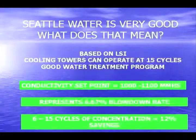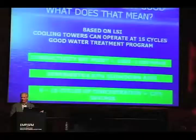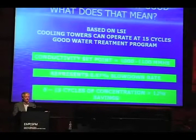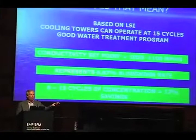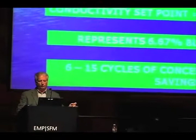I plugged Seattle water into this model and did some calculations to find out where you should be. Based on the LSI, cooling towers in Seattle can operate at 15 cycles of concentration — way out on that graph, which is very good. You need a good water treatment program to prevent scaling, because as you push it out there, you will see some deposition without good water treatment. Your conductivity set points on all your controllers should be around 1,000 to 1,100, unless you have varying makeup source waters. When you go back, check your cooling tower controller and see if it's between 1,000 and 1,100. If it's not, ask your water treatment supplier why.